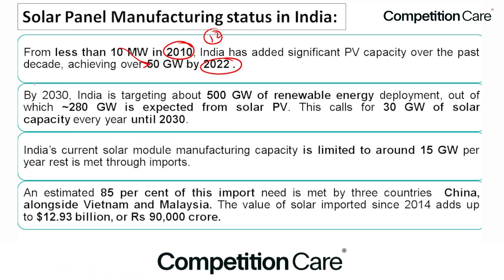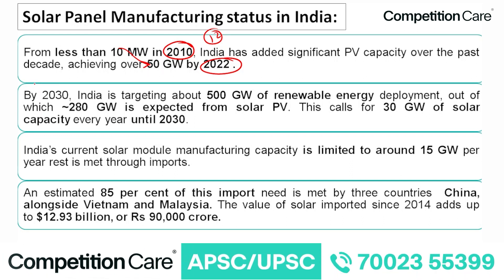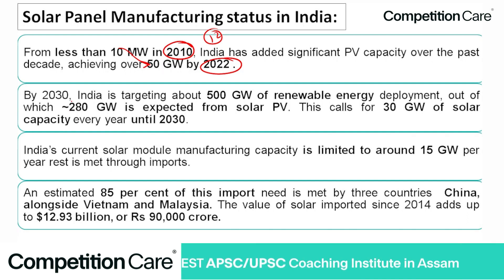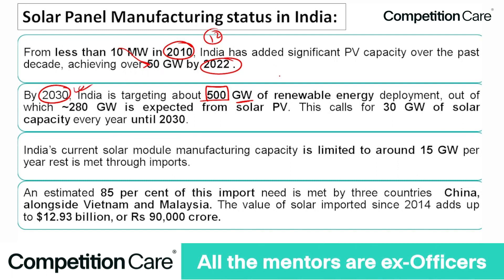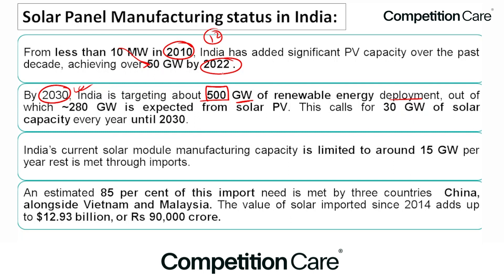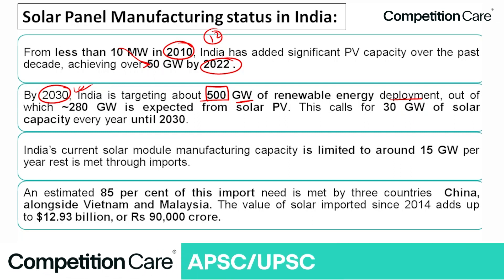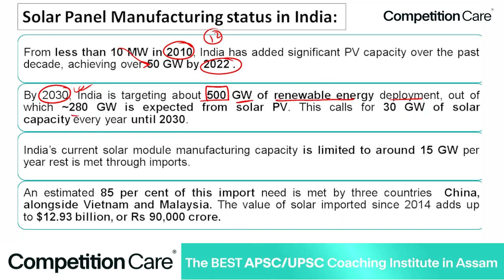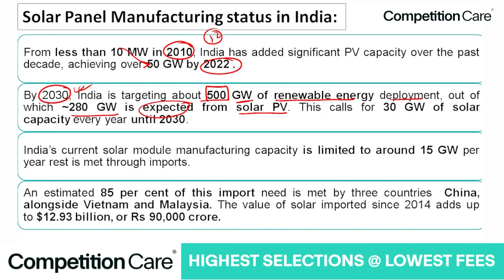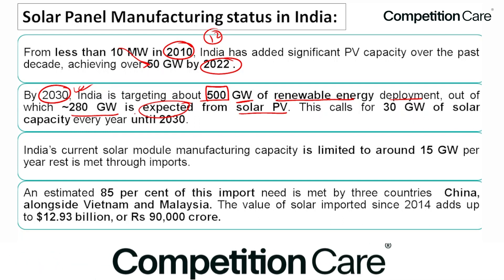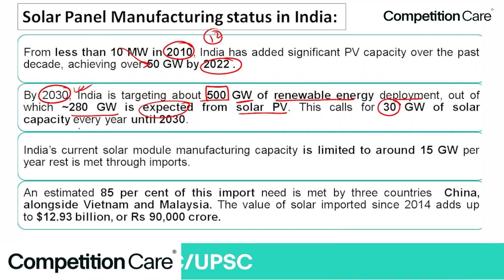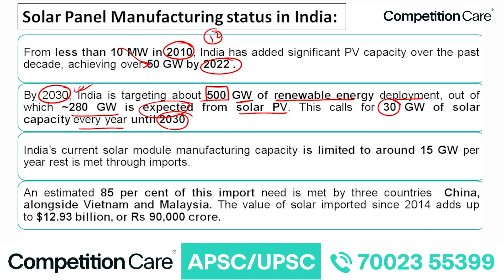India has committed to the world to achieve net zero by 2070. By 2030, India is targeting about 500 gigawatts of renewable energy deployment, out of which 280 gigawatts is expected from solar PV — more than 50 percent. This calls for adding 30 gigawatts of solar capacity every year until 2030.